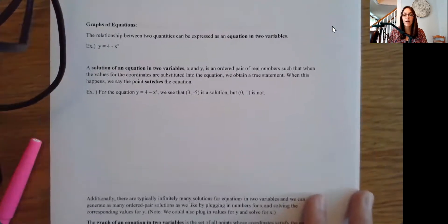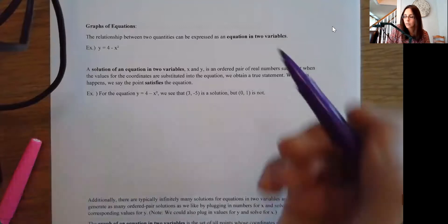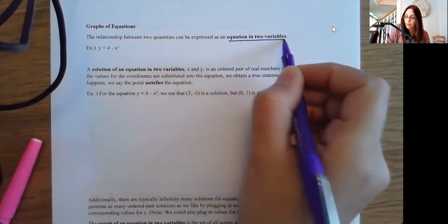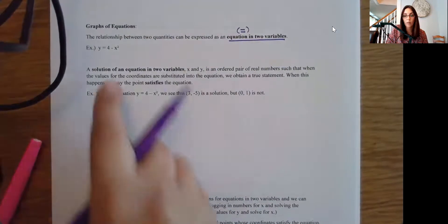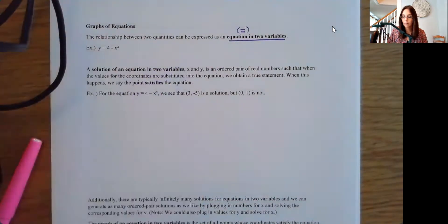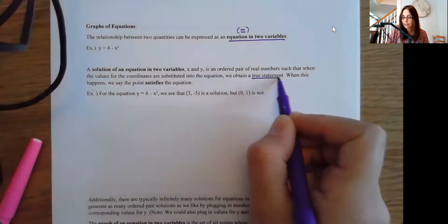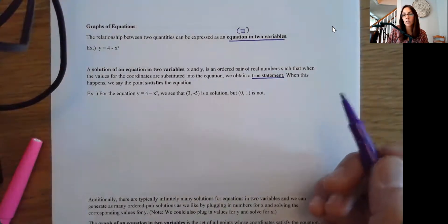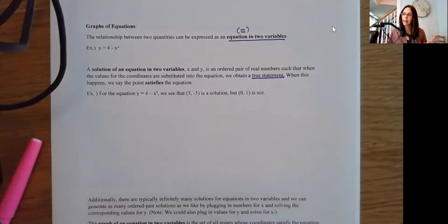Now let's graph some equations. The relationship between two quantities can often be expressed as an equation in two variables — remember, equations have equal signs, whereas expressions do not. A solution of an equation in two variables is an ordered pair of real numbers such that when those values are substituted into the equation, we obtain a true statement. Basically, a solution means that when you plug in those values, you get a true statement — and this definition is consistent throughout mathematics whether you have one variable, two variables, or more.